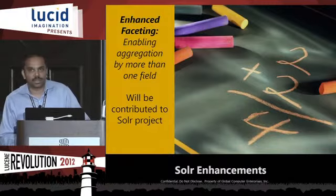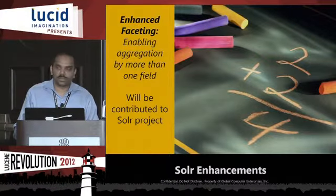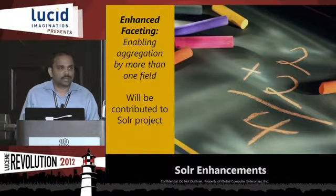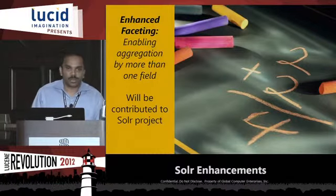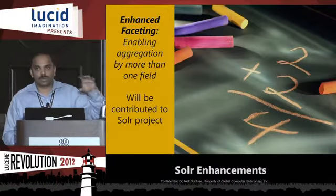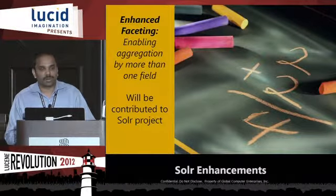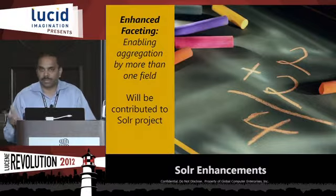Solr has a facet stats component that lets you facet numbers by a single field — very powerful for analytics, giving max and average numbers by a given field — but it only supports one field at a time. One of our requirements was to facet by more than one field, since we needed to show numbers like 'in this department under this agency' or 'in this department under this state.' We enhanced the Solr functionality to perform multi-field faceting, and we are in the process of contributing that enhancement back to the Solr project.